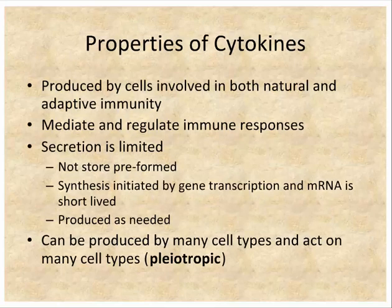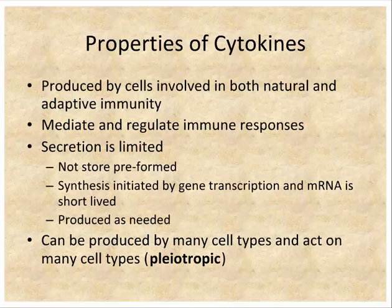Cytokines are produced by a variety of cells. One key property is that they are newly made all the time — cells don't preform these in storage granules. They're always made as needed, so there's always a delay before they appear. Upon macrophage activation, it takes time to transcribe the gene, translate the protein, and secrete it.